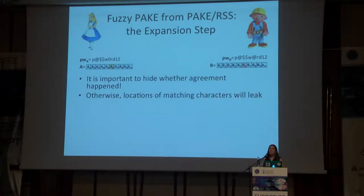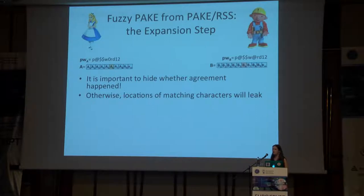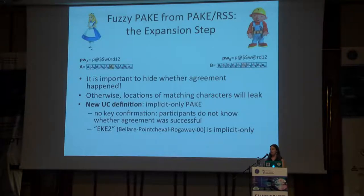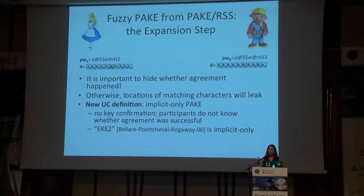One crucial observation is that it's very important for neither Alice nor Bob to learn whether they agree on any given character. If Alice learns whether she agrees with Bob on any given character, despite not knowing a password close to Bob's, she's going to learn that, say, his first character isn't 'P' — and for low-entropy passwords, this is a lot of leakage. So we introduce a UC definition for a new flavor of PAKE which we call implicit-only, where neither party learns whether they succeeded in agreeing on a key — they don't have key confirmation. The famous PAKE protocol EKE2 actually has this implicit-only property, and that's the PAKE protocol we use. When Alice does the encryption step, instead of using her password as the encryption key, she uses her list of character keys, and Bob uses his list of character keys to decrypt. This works through a combination of robust secret sharing of the session key K, together with a one-time pad encryption of the secret sharing using the character keys as a pad — very similar to the code offset construction of Juels and Wattenberg.